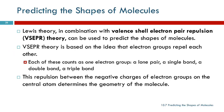VSEPR theory is based on the idea that electron groups repel each other. What is an electron group? Each of these counts as one group: a lone pair of electrons, a single bond, a double bond, a triple bond. Those are groups of electrons — not just pairs, but groups. So we have repulsion between the electron groups, and that determines the geometry of the molecule.